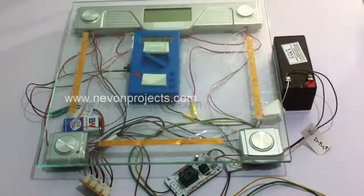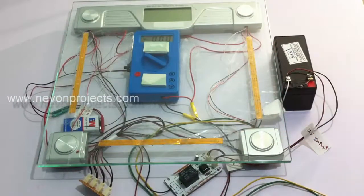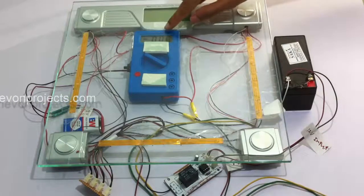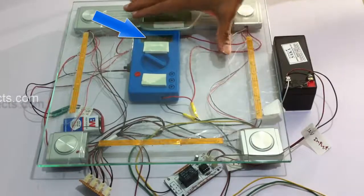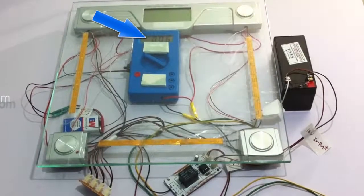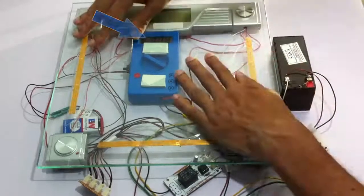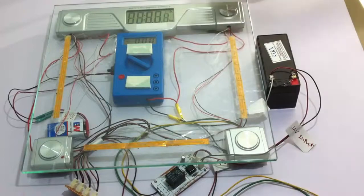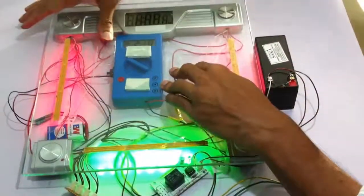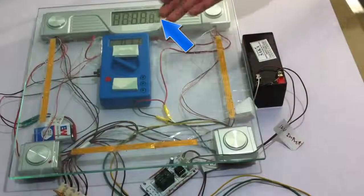This voltage is also shown on this voltmeter here. So when I press it here, you can see that the voltage is generated. When you press harder, voltage is generated and it also shows the weight here. So when a person steps foot on this, a voltage is generated.